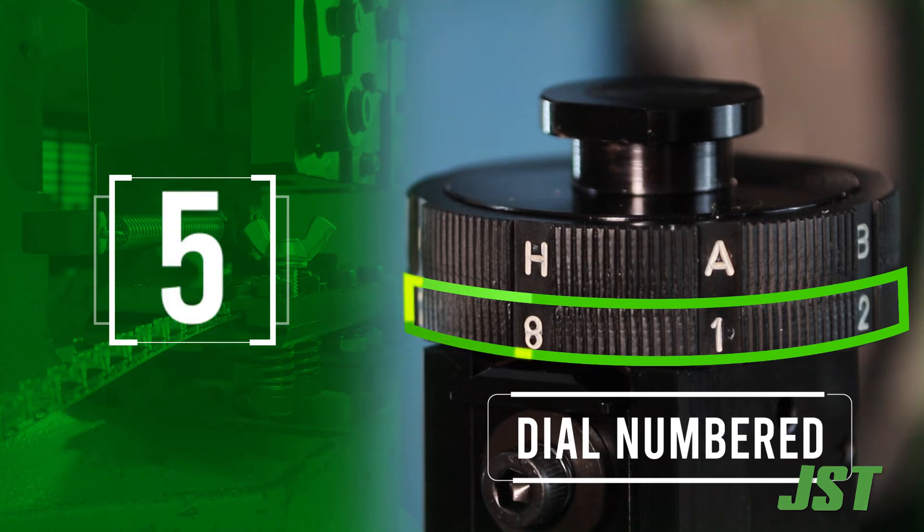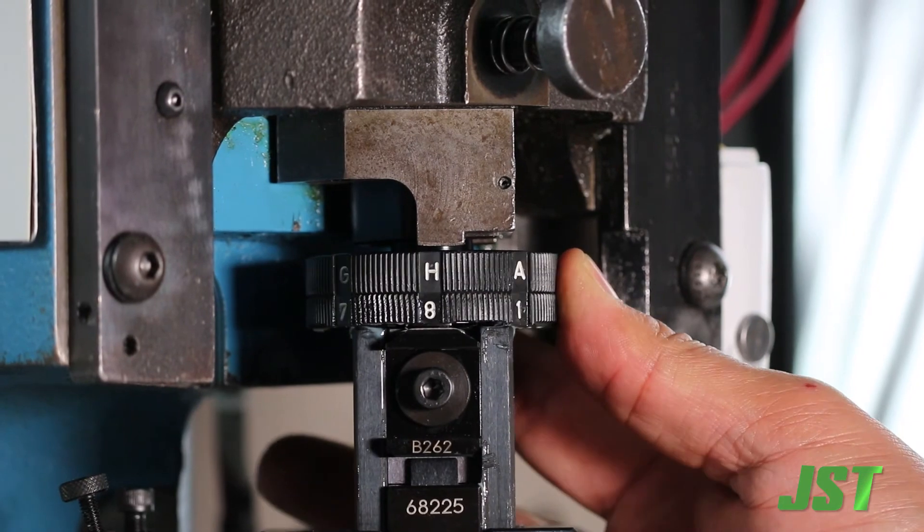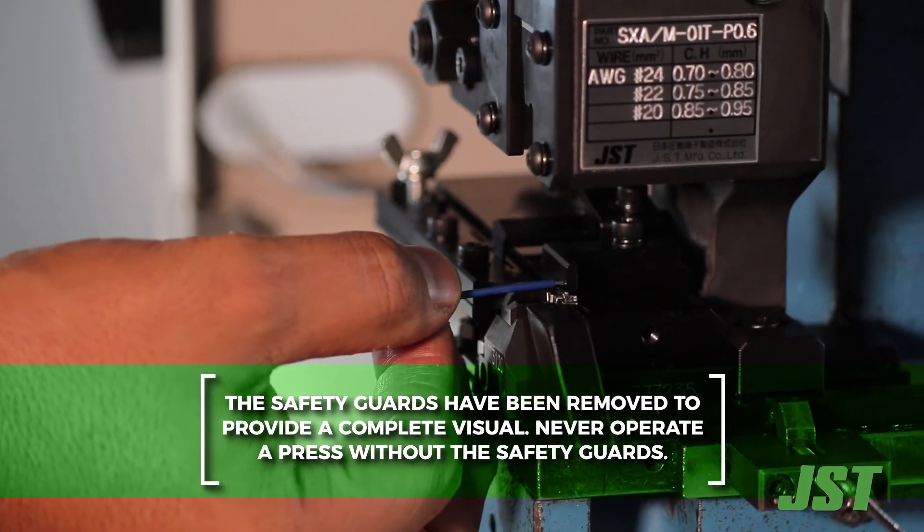Adjusting the numbers down changes the crimp height by 0.1 mm. Starting with the two dials in the H8 positions, crimp the terminal and measure the crimp height.